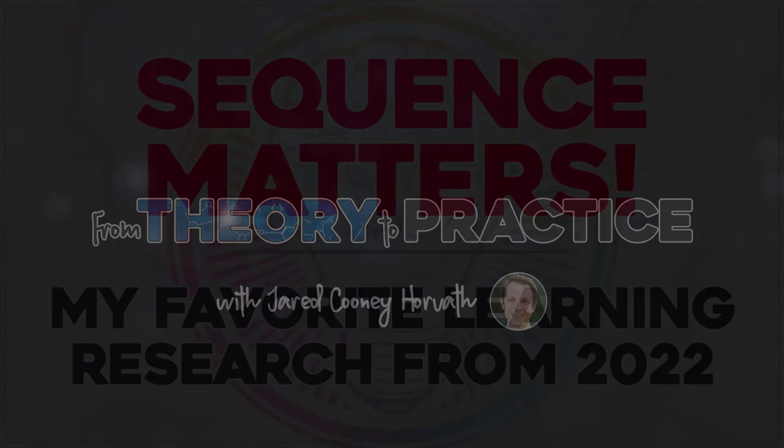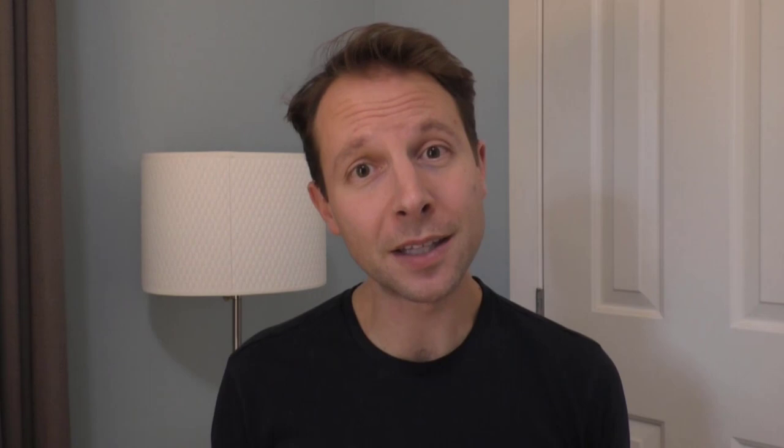Hello everybody, and welcome to this week's From Theory to Practice, where I take a look at the research so you don't have to. The article I've selected this week is my favorite article from last year, 2022. I think this is the best article published, and it's called Sequence Matters: Retrieval Practice Before Generative Learning is More Effective Than the Reverse Order, by Roel and colleagues.